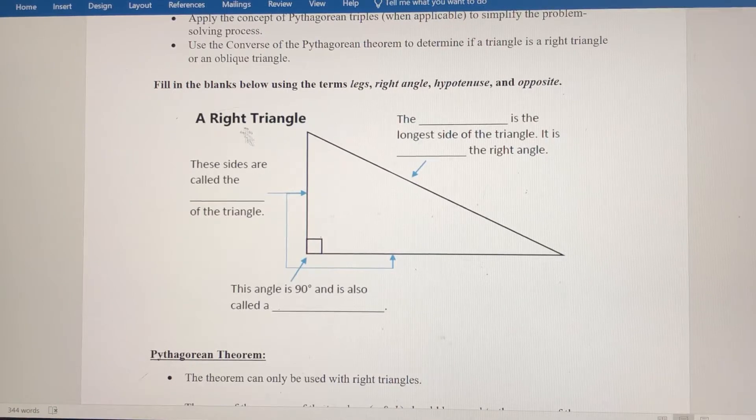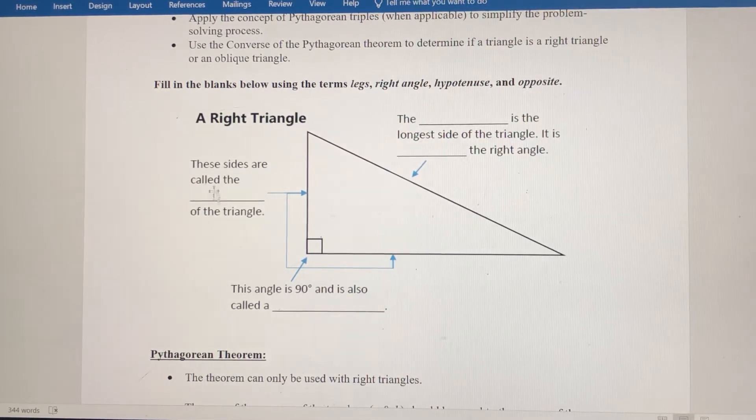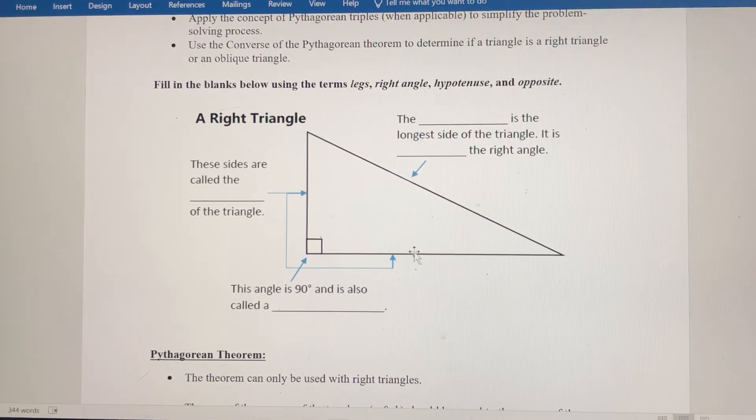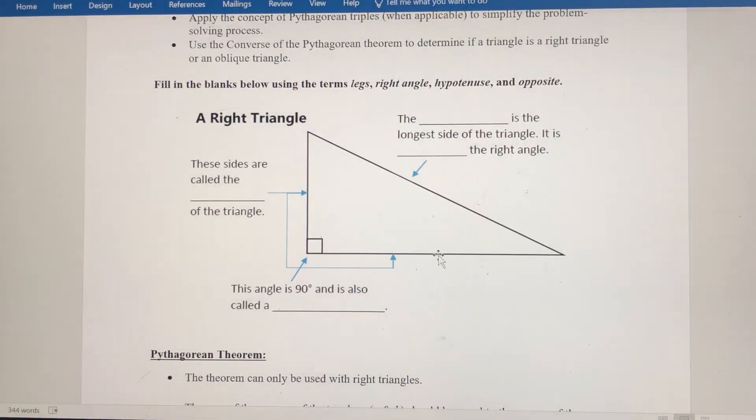First thing, we need to understand what right triangles are. It says fill in the blanks below using the terms legs, right angle, hypotenuse, and opposite. So first thing, this blank is going to be the legs. It's these two sides that are adjacent to the right angle, or that form the right angle. So this side and this side form the right angle. They're called the legs.